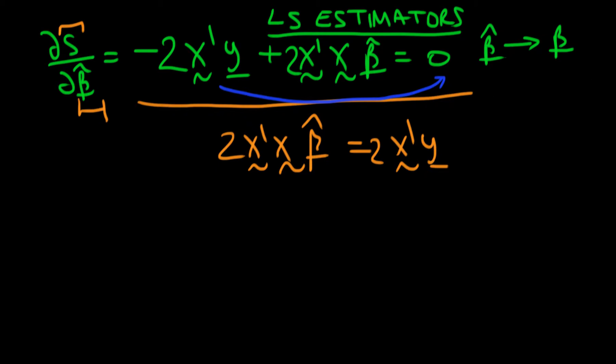We notice that we've got a 2 on both sides so we can just divide through by that, so we've just got x prime x times beta hat equal to x prime y for the case of least squared estimators.